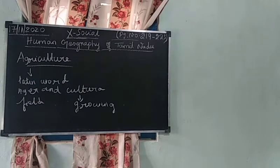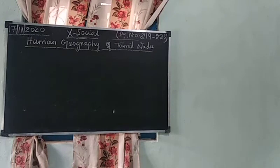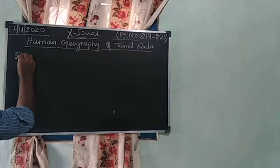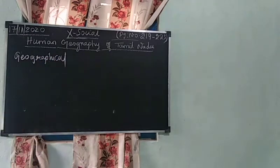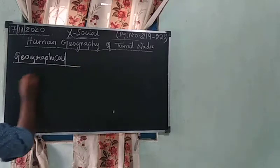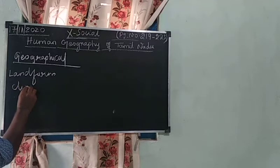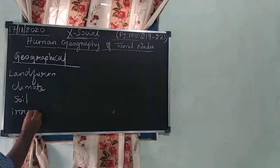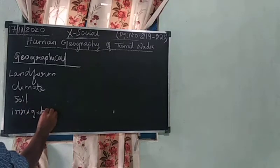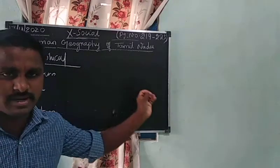Next is the geographical determinants of agriculture. The factors that determine agriculture geographically are: landform, climate, soil, and irrigation. These are all the geographical factors that determine agriculture.